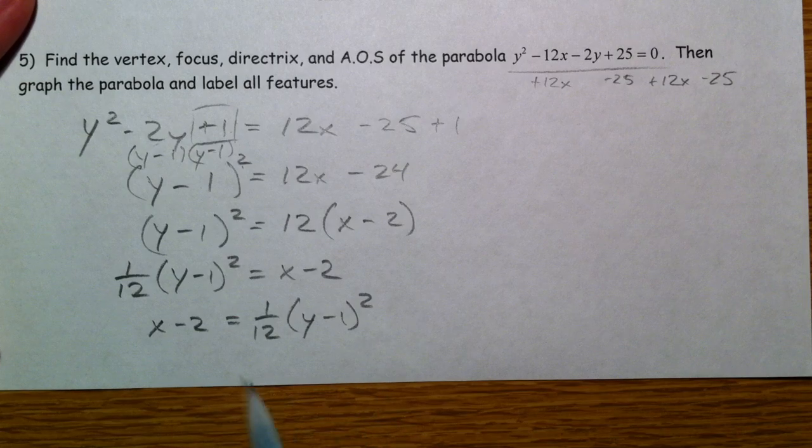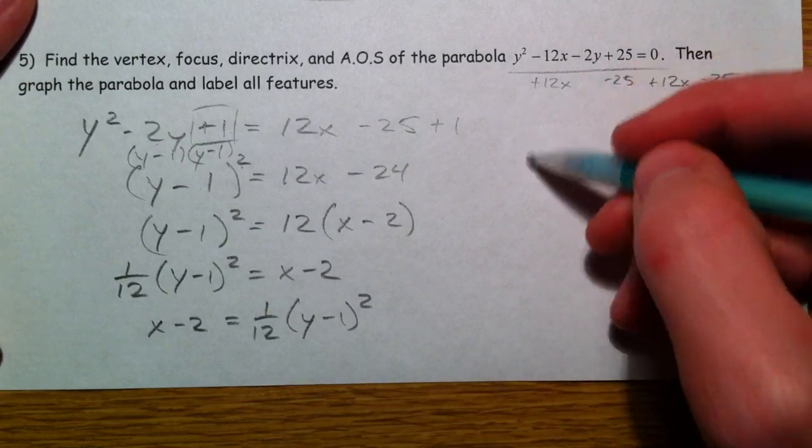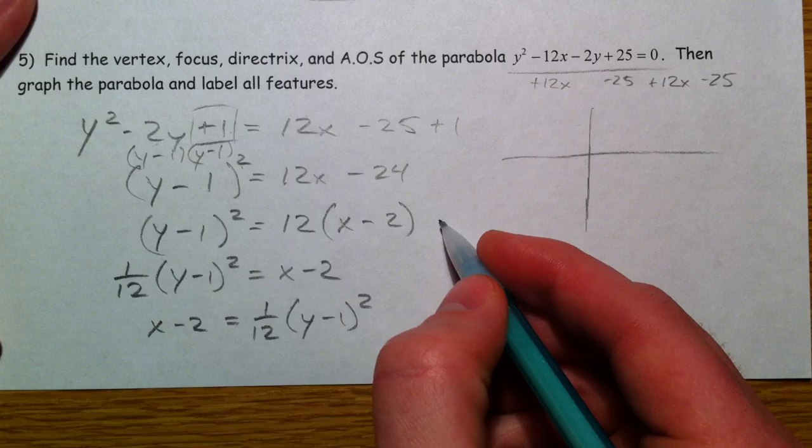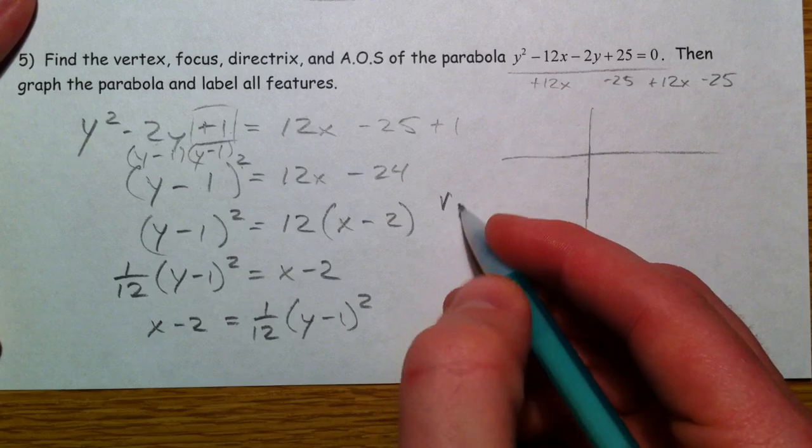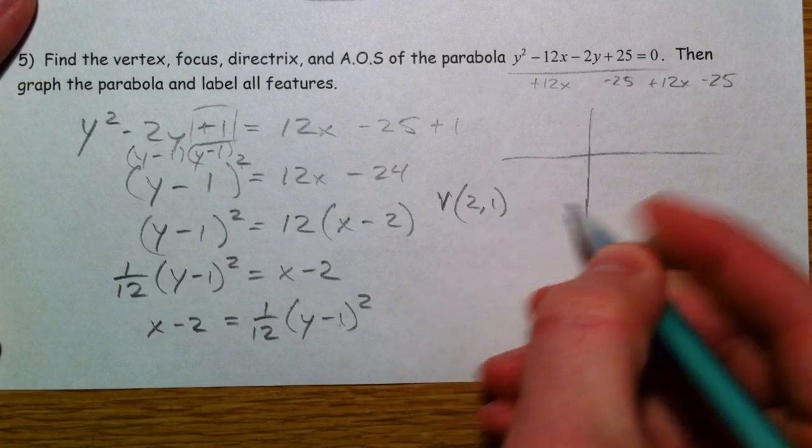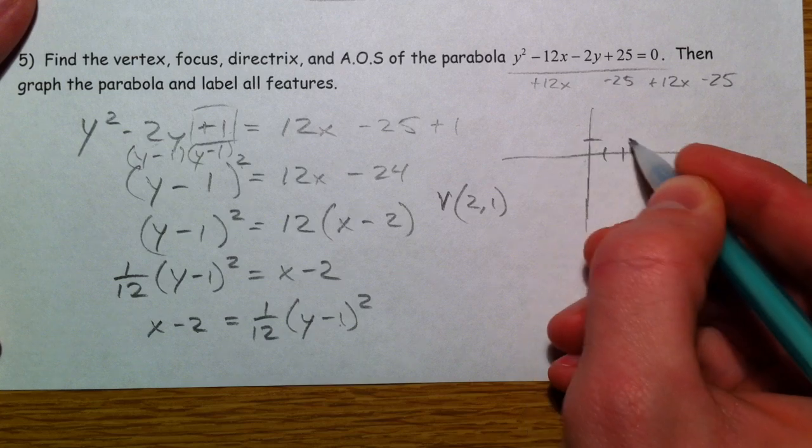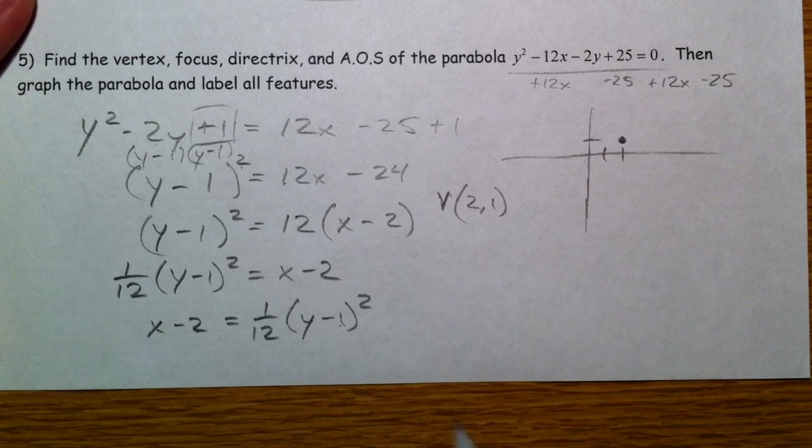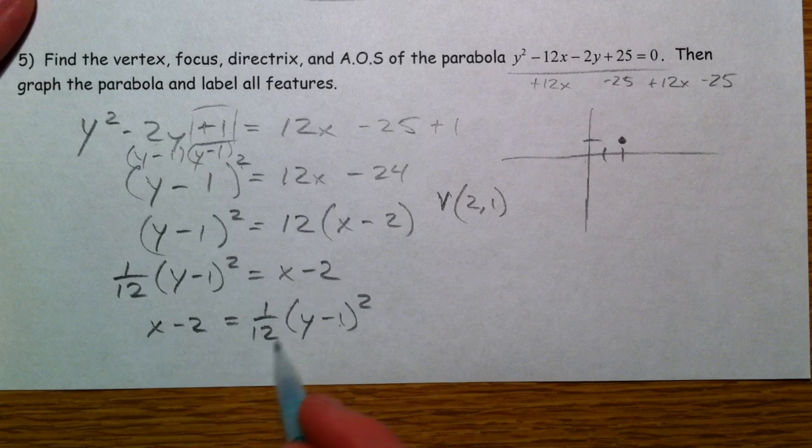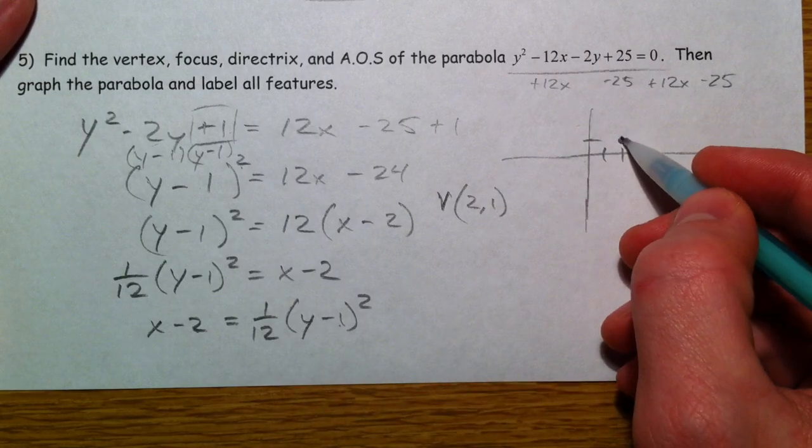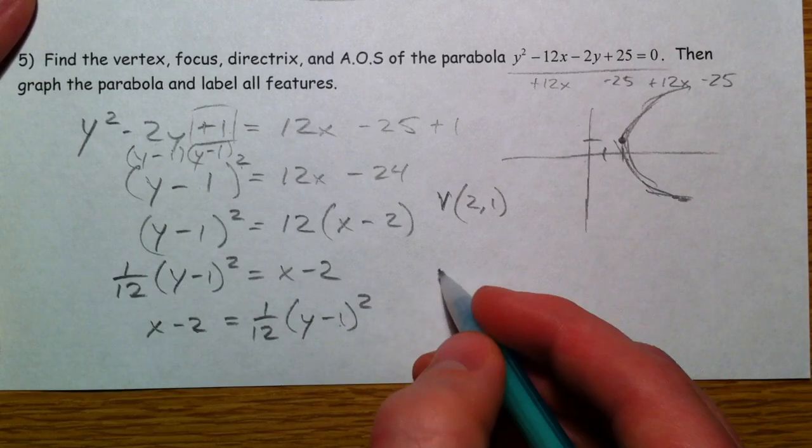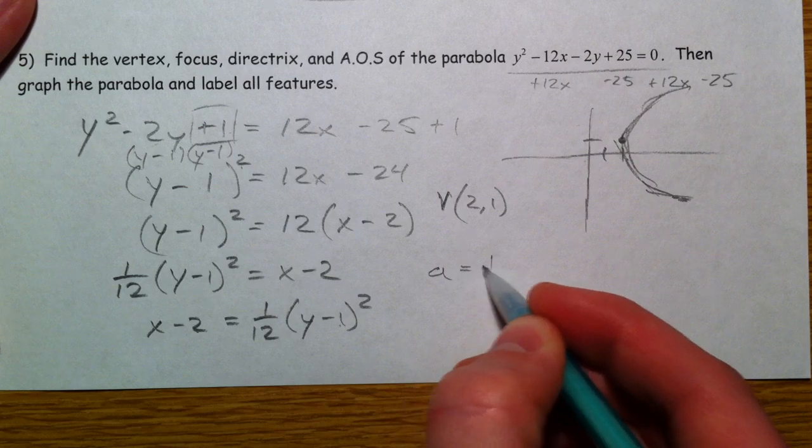So there we have it. It's a y squared. And so I think in my head—actually, I'm going to graph it to help me out. Vertex is (2, 1). Which direction does it open? It's a y squared, so it opens side to side, left and right. And because the p is positive—sorry, because the a is positive—it opens to the right.